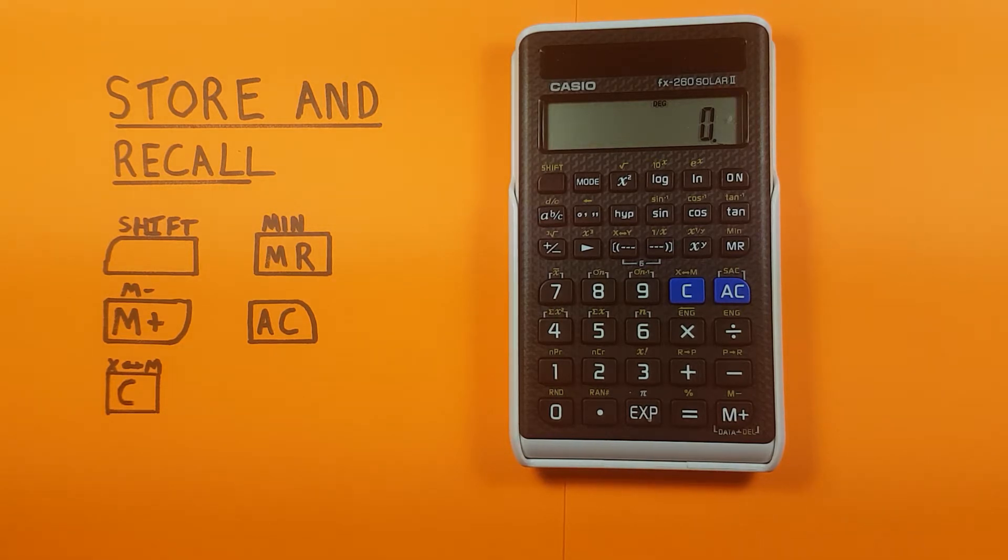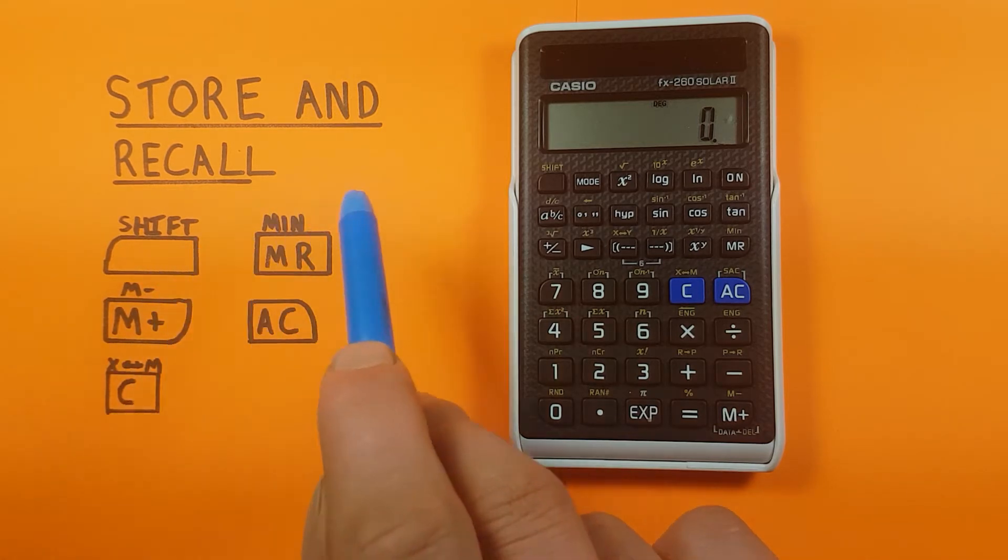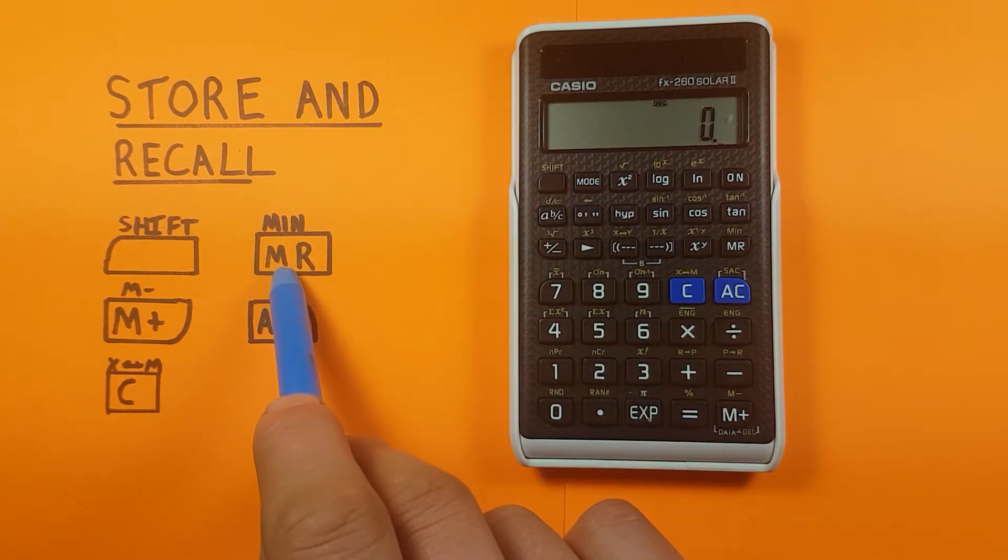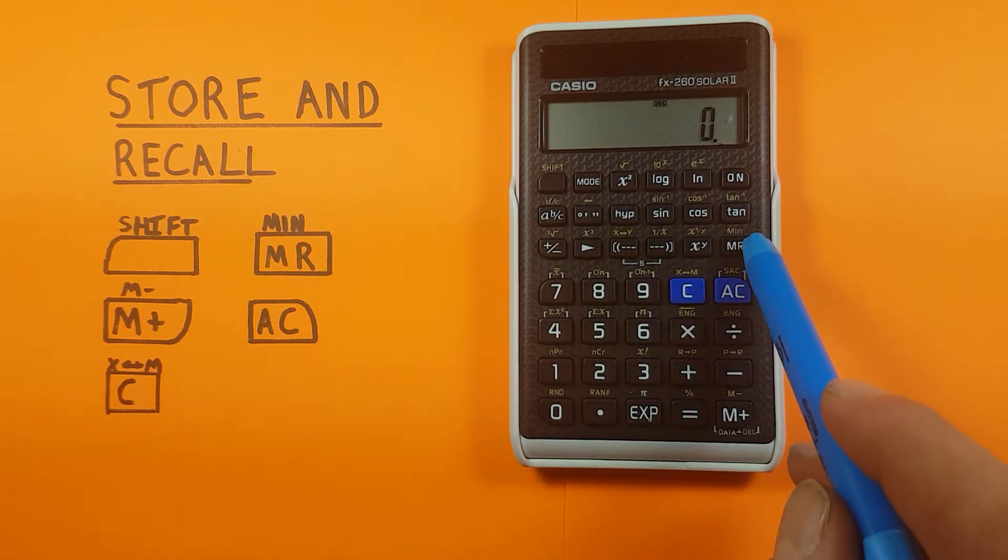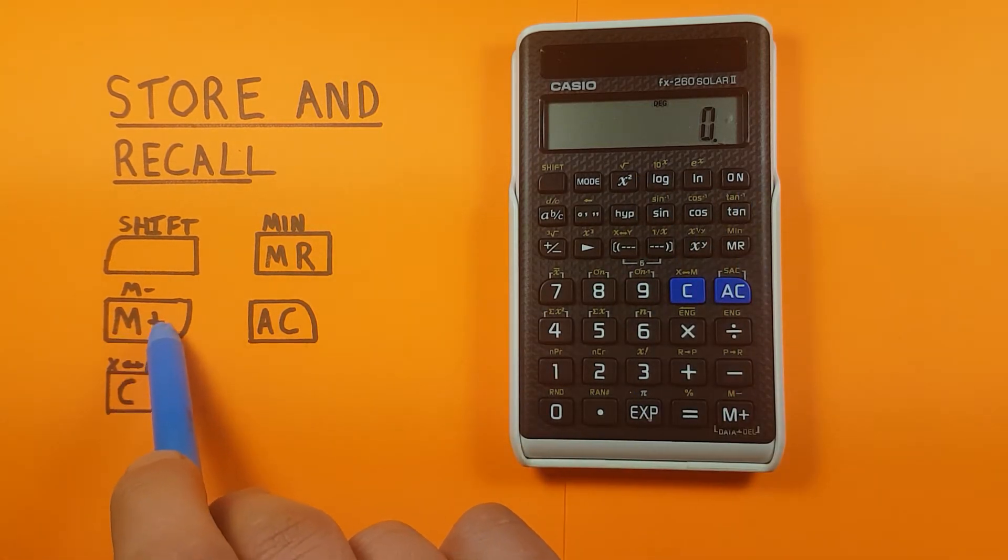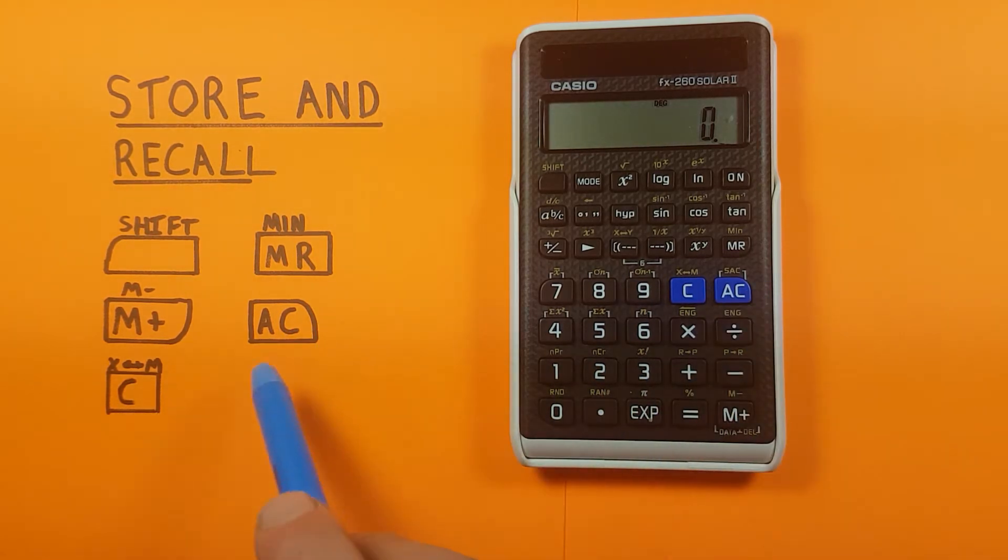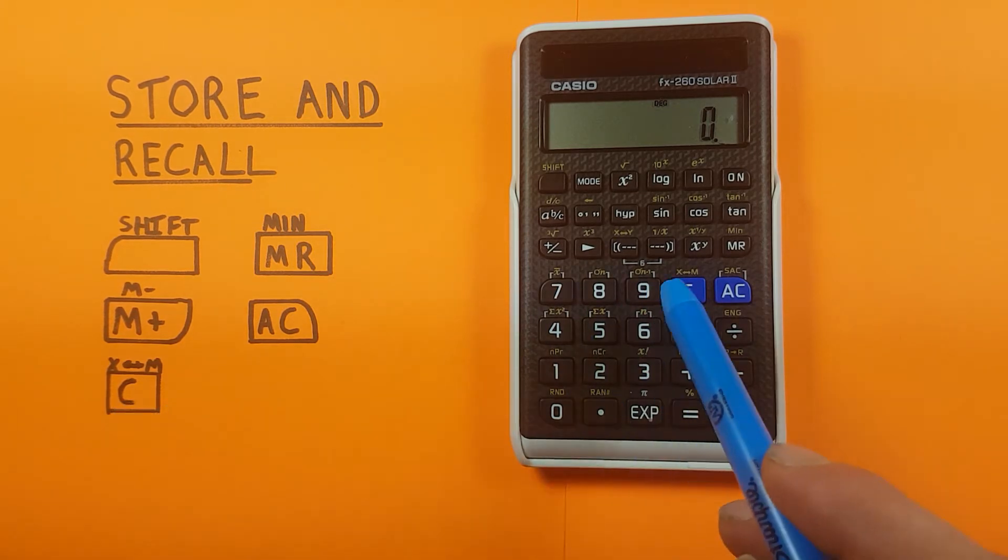To get started, we'll be using the shift key located here, the MR/MIN key located here, the M+ with the shift function of M- located down here at the bottom right, the AC key, this blue one here, and the C key located here.